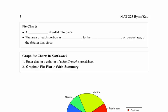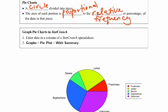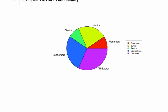Other way we're going to represent categorical data is using a pie chart. I'm sure you've all seen a pie chart before. It's a circle that is divided into pieces that are proportional to whatever percentage of the entire sample that they make up. The area of each portion is proportional to the relative frequency, or percentage, of the data that's represented in that piece. And making pie charts are very easy. In StatCrunch, you're going to go to Graphs, Pie Plot this time, and then choose With Summary if you've got the data in your spreadsheet.